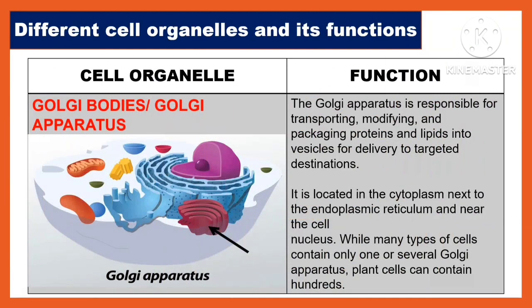Another cell organelle is the Golgi bodies or Golgi apparatus. The Golgi apparatus is responsible for transporting, modifying, and packaging proteins and lipids into vesicles for delivery to targeted destinations. It is located in the cytoplasm next to the endoplasmic reticulum and near the cell nucleus. While many cell types contain only one or several Golgi apparatus, plant cells can contain hundreds.